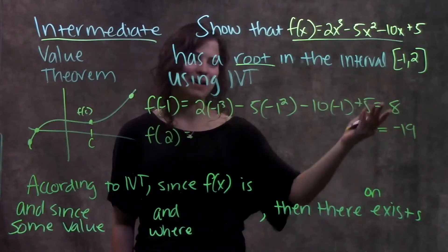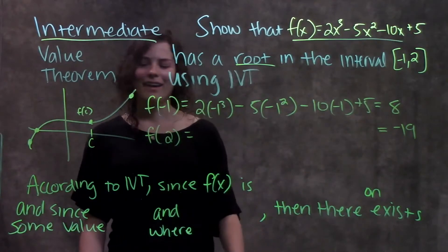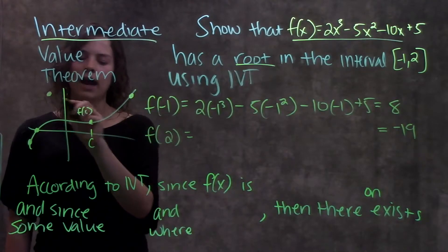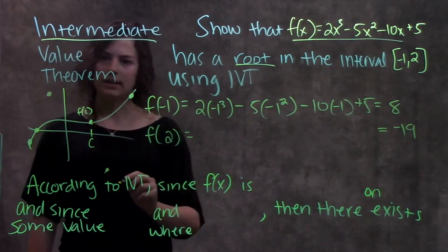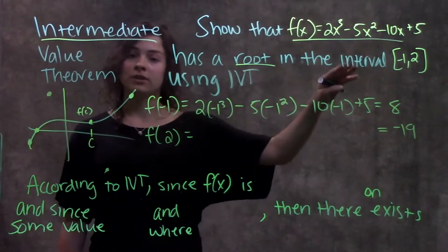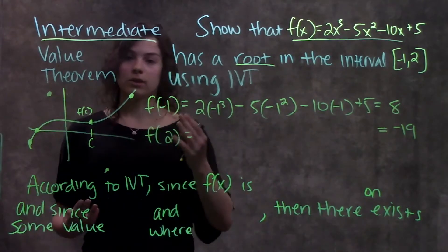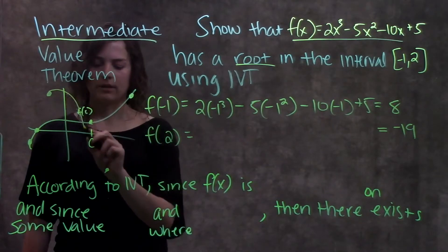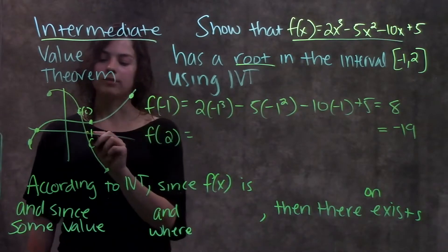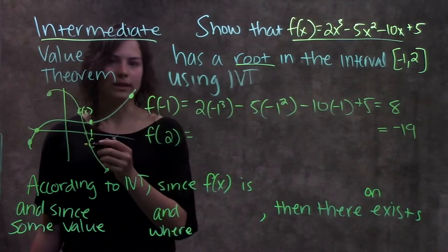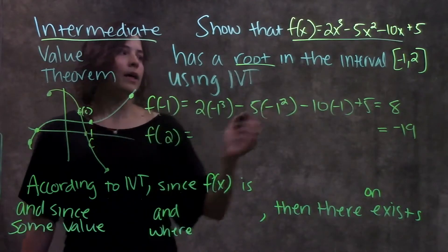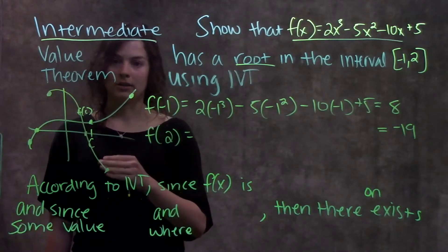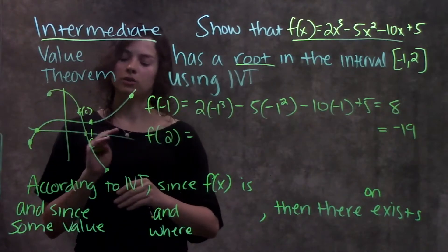Convenient, right? We have a positive and a negative value. Okay, so just thinking about this, if we have some positive value here at eight, and then some negative value here at negative 19, and we already said that this function is continuous, I don't know what this function looks like, but I do know that in order to get from positive eight down to negative 19, I have to cross this x-axis at least once. So I know that in this interval, there is a root between negative one and two, because it goes from a positive value to a negative value.